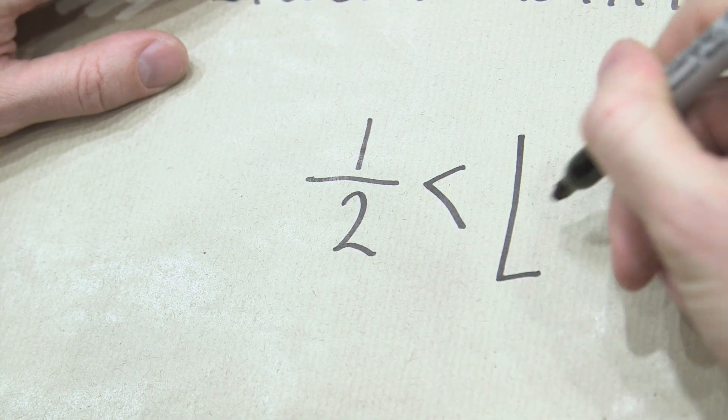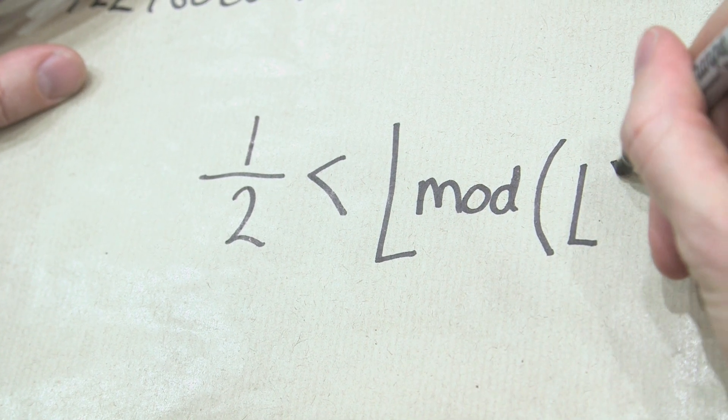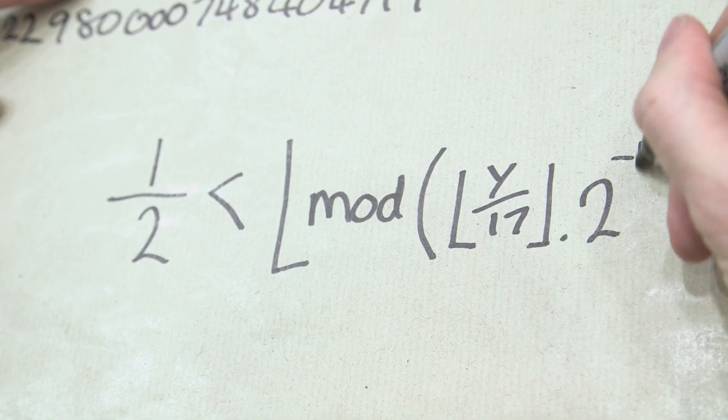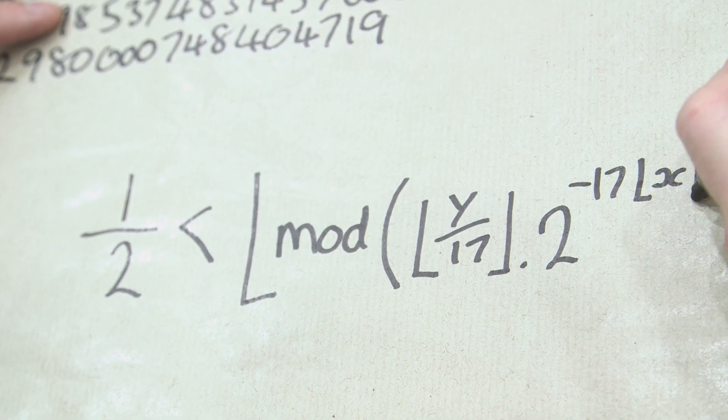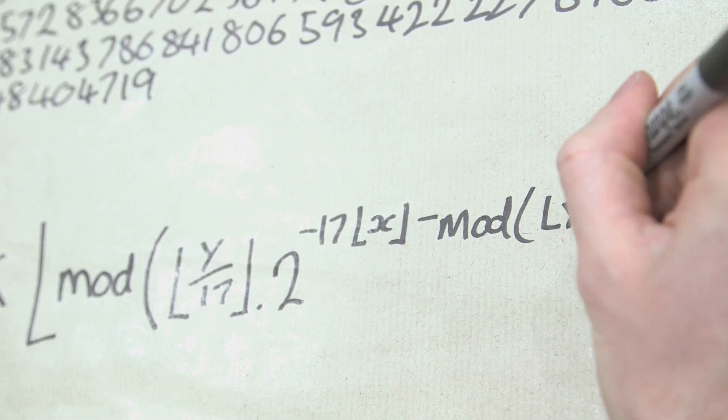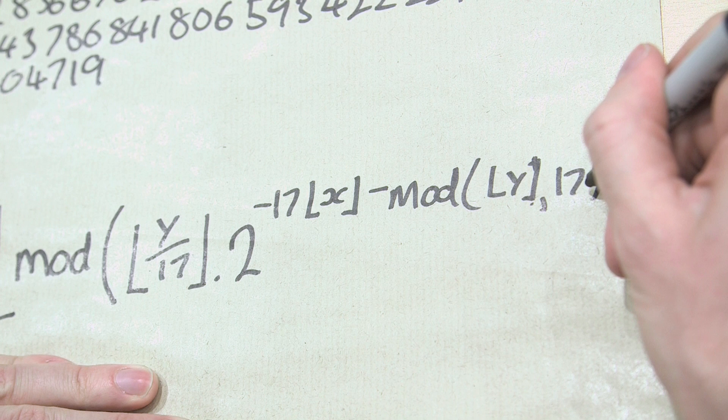I still find this number absolutely fascinating, and the reason this number is so great is because it relates to a fantastic inequality, a formula if you will, which I will put underneath here. So the formula we're going to look at is a half less than the floor function of the mod function of the floor function of the y coordinate on 17 floor function times 2 to the power of negative 17 times the floor function of x, subtract the mod of the floor function of y again. Oh that's floor, sorry.